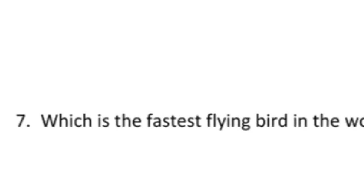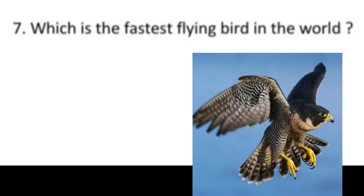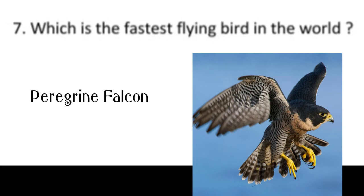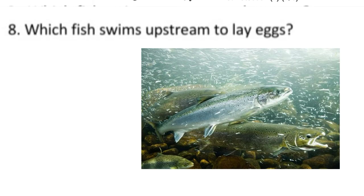Question number 7: which is the fastest flying bird in the world? The answer is the peregrine falcon. It is not only the fastest flying bird in the world, but in fact the fastest animal on earth when in a dive. Question number 8: which fish swims upstream to lay eggs? The answer is salmon.